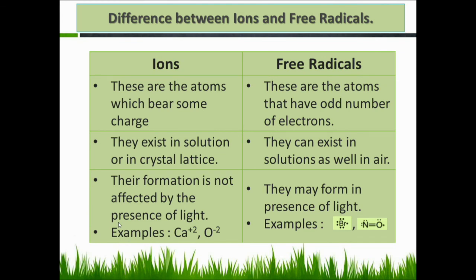Difference between ions and free radicals: ions are atoms which bear some charge; free radicals are atoms that have an odd number of electrons and no charge — they are neutral in nature. Ions exist in solution or in a crystal lattice; free radicals can exist in solution as well as in air. Ions' formation is not affected by the presence of light — examples: calcium ion, monoxide ion. Free radicals may form in the presence of light — examples: bromine ion, nitrogen monoxide ion.